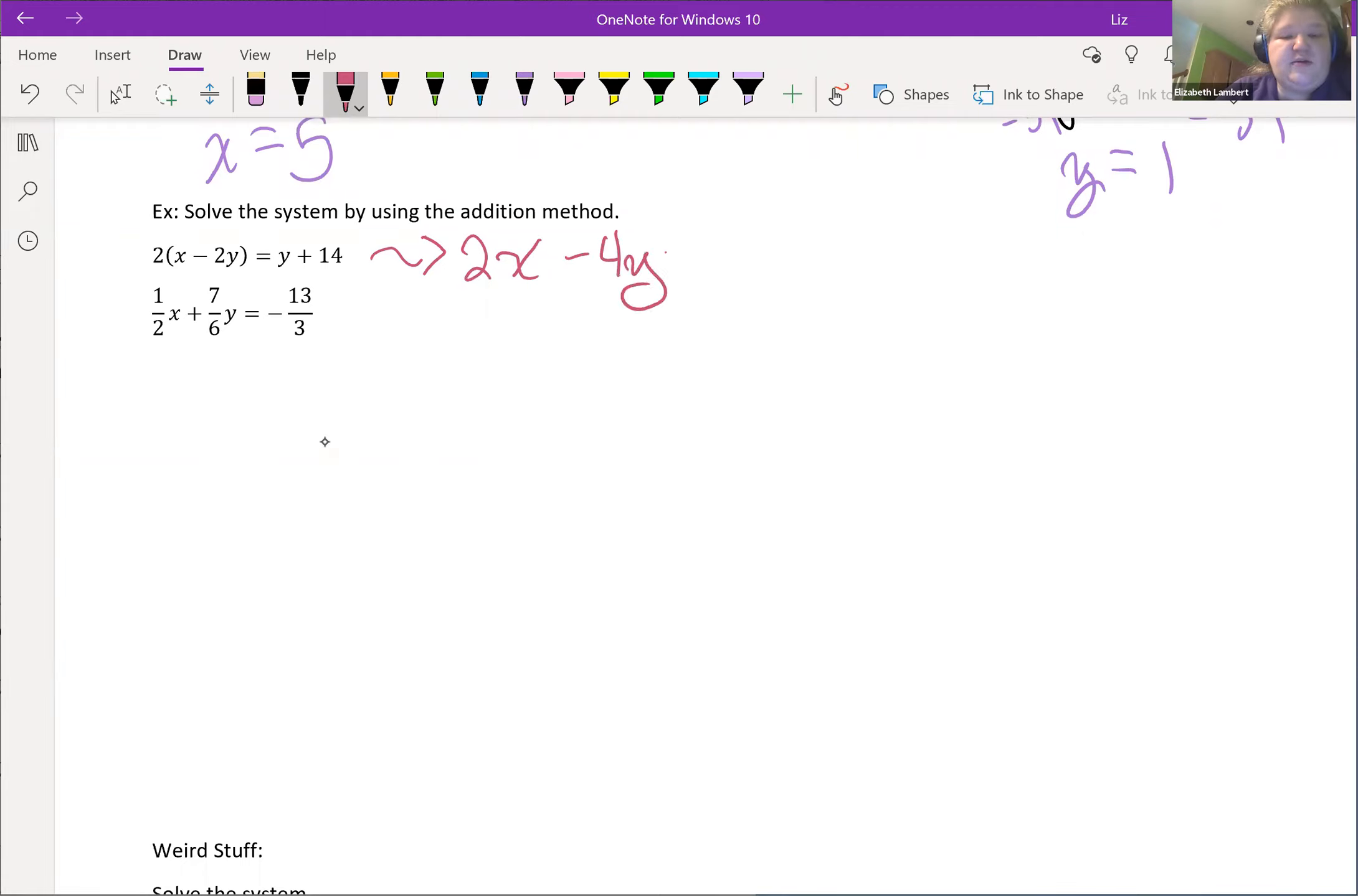So here I'm going to distribute that two so it is 2x minus 4y equals y plus 14. And then I need to minus the y. So we have 2x minus 5y is equal to 14.